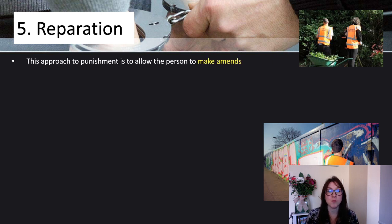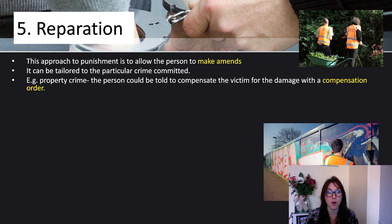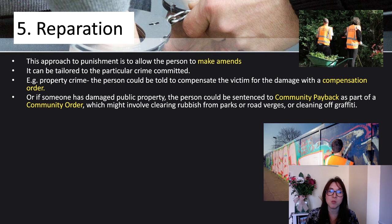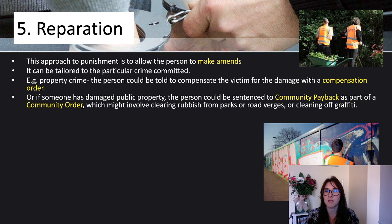Finally, reparation. This approach to punishment is to allow the person to make amends, and it can be tailored to the particular crime committed. For example, for property crime the person could be told to compensate the victim with a compensation order. If someone has damaged public property, they could be sentenced to community payback as part of a community order, which might involve clearing rubbish from parks, road verges, or clearing off graffiti — community payback as compensation to make amends.